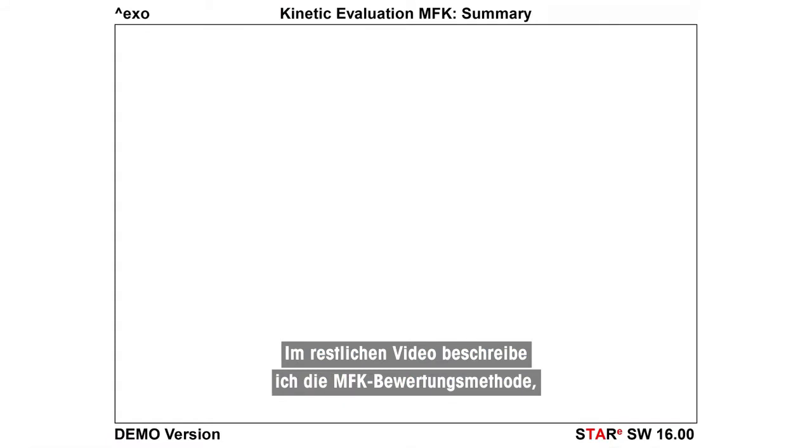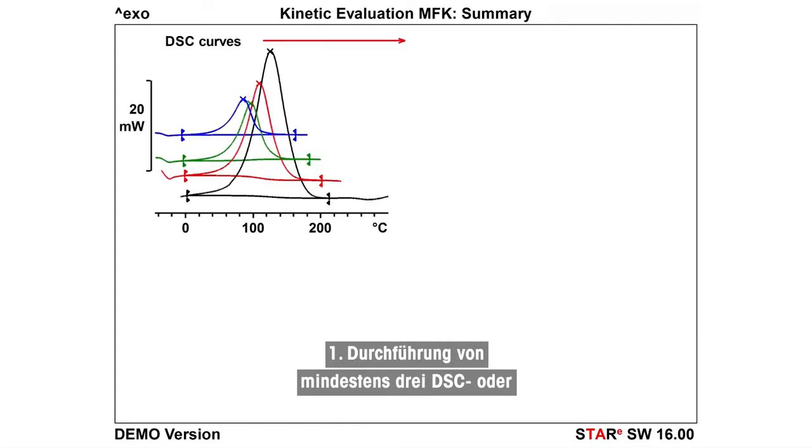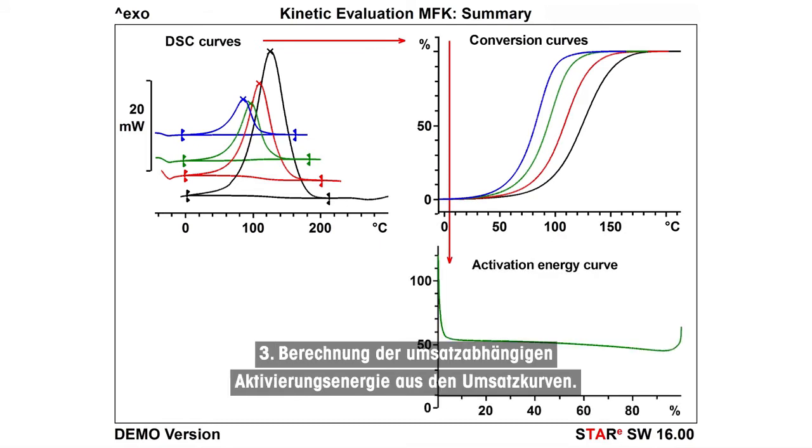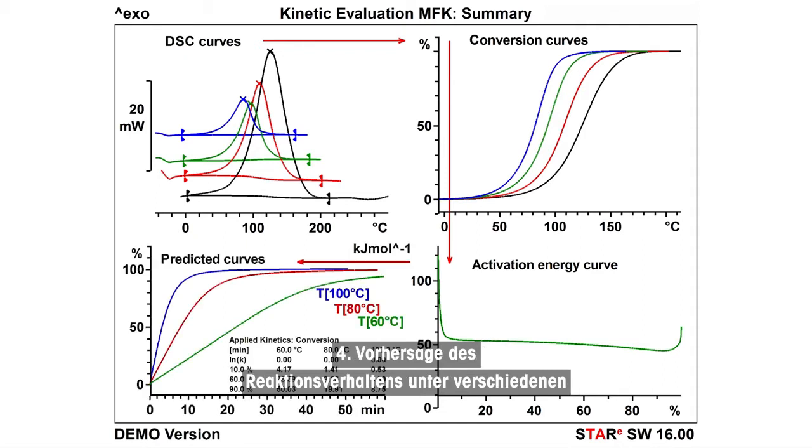In the remainder of this video, I will describe the MFK evaluation method, which can be summarized in four simple steps. 1. Perform at least three DSC or TGA measurements at different heating rates. 2. Calculate conversion curves from the measured curves. 3. Calculate the conversion-dependent activation energy from the conversion curves. 4. Use the calculated activation energy to predict reaction behavior under different conditions.